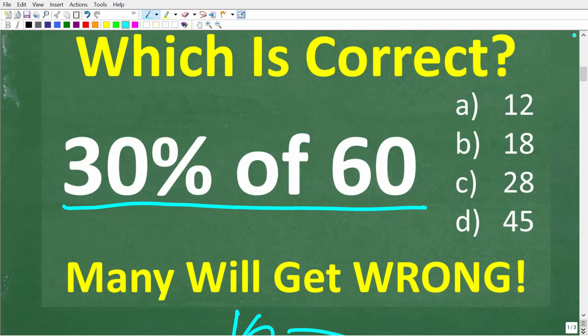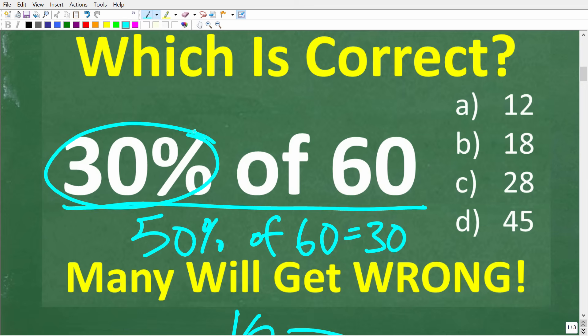And we can use this fact to help eliminate some options here. All right, so let's take a look at our answers. So if 50% of 60 is 30, well, what answers here definitely don't make sense. So if we're looking for 30% of 60, and we know that 50% of 60 is 30, well, 30% of 60 must be less than 30. So option D should not make any sense to you. So we can eliminate that.